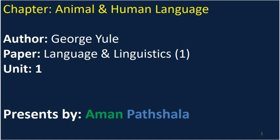Hello friends, welcome. My name is Kamal Veer. Today we will discuss the chapter and the name of the chapter is Animal and Human Language. Its author is George Yule and his paper is Language and Linguistics Part 1, Unit Number 1. So let's start.